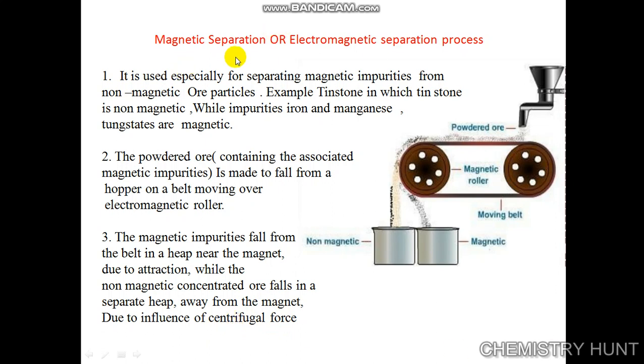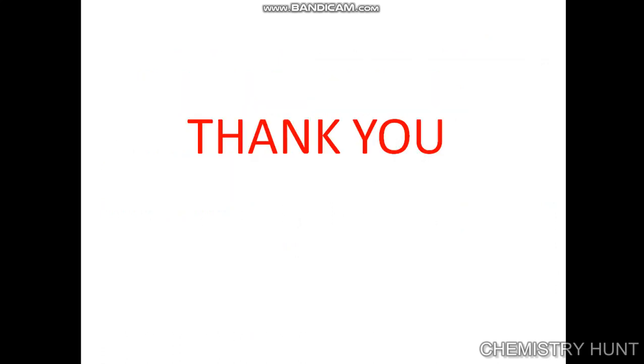The main aim of the magnetic separation or electromagnetic separation process is that it separates the magnetic particles from the non-magnetic ore particles. This is the principle of the magnetic separation process. Thank you.